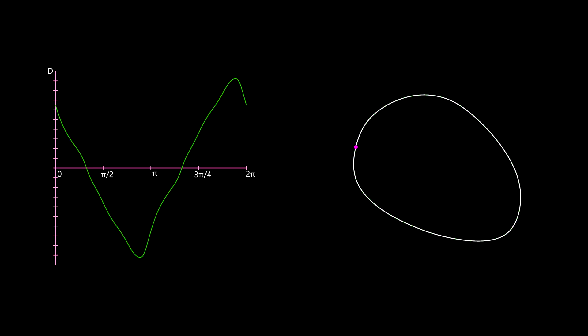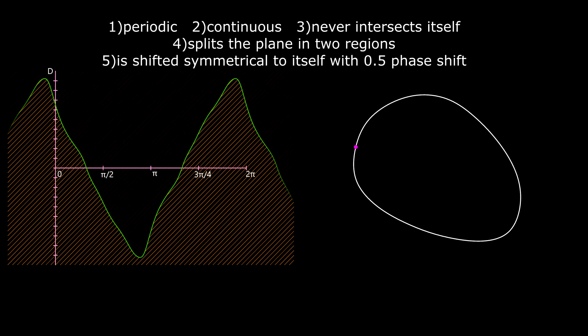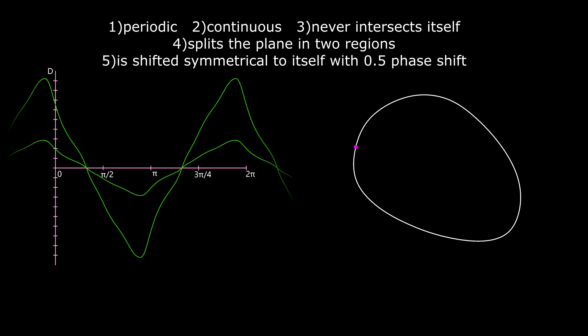The map curve shares some properties with the original curve. It's periodic in both directions. It's continuous. It never intersects itself. The curve splits the plane in two regions. And it is shifted symmetrical to itself with one half phase shift.